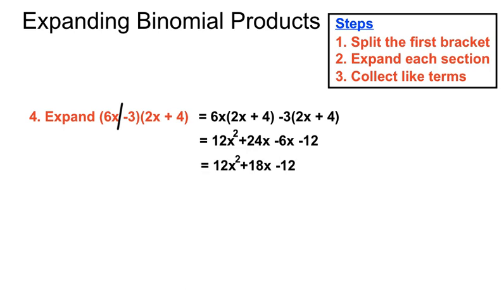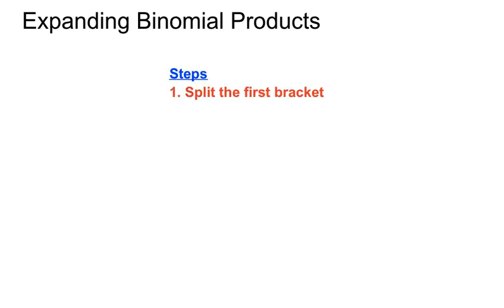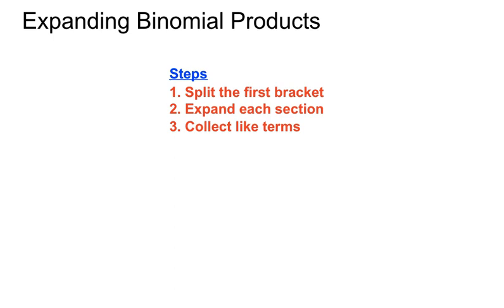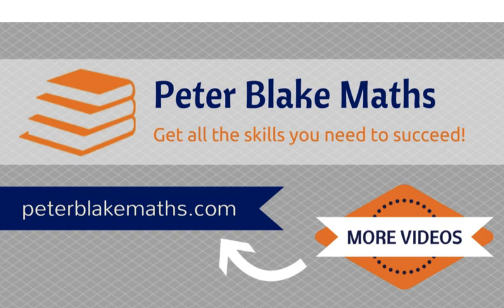Once again, the part to slow down and be careful with is that end bit, to get the right signs on the final term. So expanding binomial products: the steps were to split the first bracket, expand each section carefully — particularly when there's a minus number in front of one of the brackets — and then collect like terms if there are any. Hope that helps. PeterBlakeMaths.com. That's expanding binomial products. See you next time.